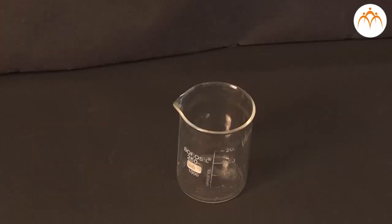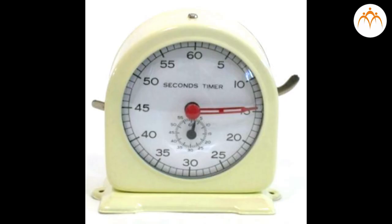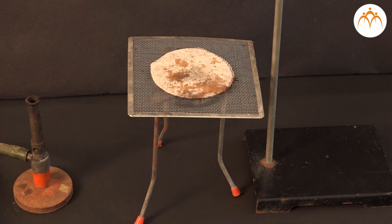To measure temperature of hot water during natural cooling and plot the graph of temperature versus time. Apparatus: we need a 250 ml glass beaker, thermometer with gradation from 0 degrees to 100 degrees, a clock, a burner or spirit lamp etc.